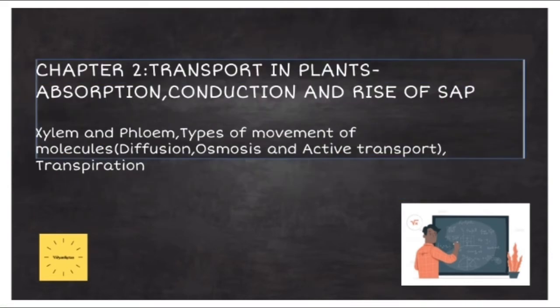The second chapter under Unit 1 is called Transport in Plants, Absorption, Conduction and Rise of Sap. We will study about the structure and functions of xylem and phloem, which helps in conduction of water and minerals in the plant body respectively. Then we will study about the different types of movement of molecules, namely diffusion, osmosis and active transport. And lastly, we will study about the process of transpiration, which helps in conduction of water and minerals in plant body even in the tall trees.